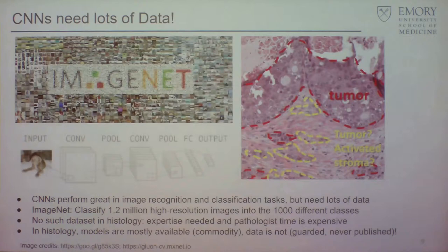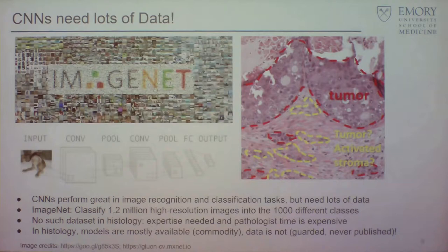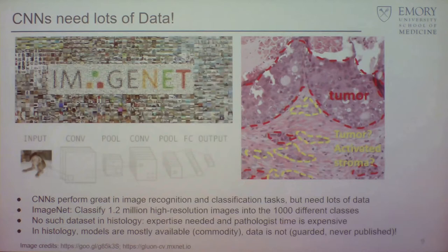The problem is these things are usually annotated by people — you go on some online website and you know what a dog or cat looks like, you don't need training. Unfortunately in histology this is not the case. What you're seeing here is a very normal example where it's not just color or texture — there are subtle patterns. This is tumor; this is actually not tumor, these are activated stroma, fibroblasts that make supporting tissue irritated by the tumor. It's not clear how you can do that without experts, and expert time is very expensive.